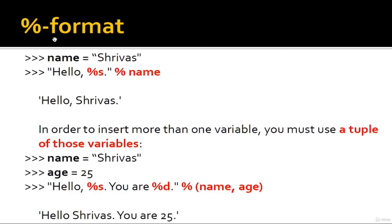Let us start with %format. We create name = 'Srivass'. To print a formatted output, we write: print('Hello, %s.' % name). Here %s is replaced by the value stored in name, which is Srivass. So the output is: 'Hello, Srivass.'